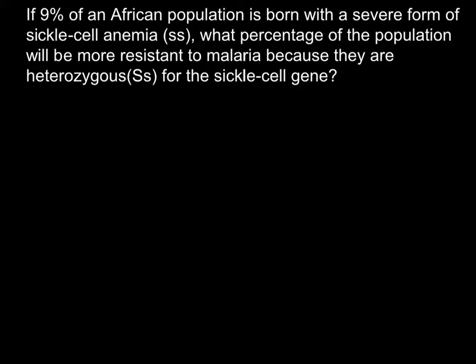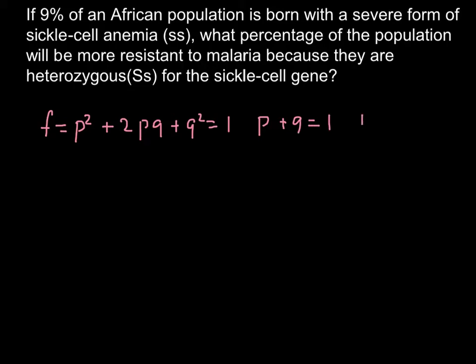In order to solve this problem, we are going to use the Hardy-Weinberg formula that gives us the frequency of the genotypes: f = p² + 2pq + q², which equals 1. And p + q also equals 1, where 1 equals 100%.